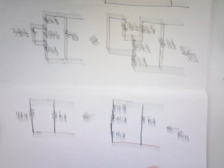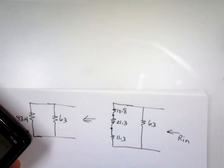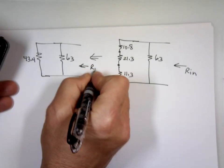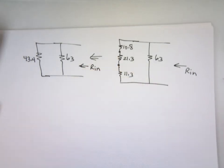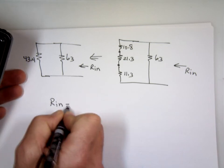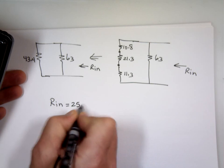And now we do the product over the sum. Again, then parallel. I'm looking for R_in looking that way. The product over the sum. Divided by 63 plus 43.4. So R_in equals 25.7 ohm.